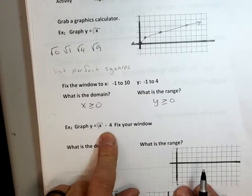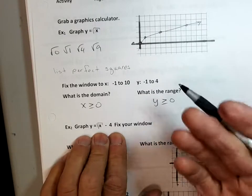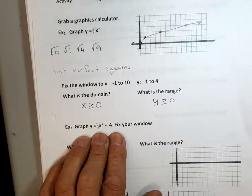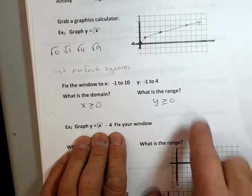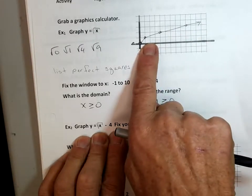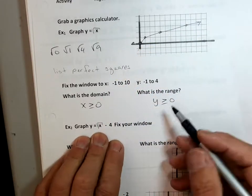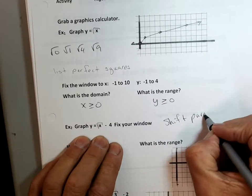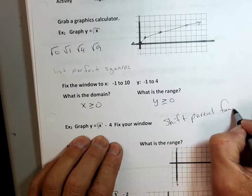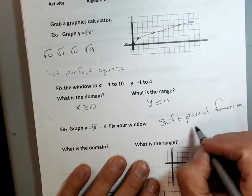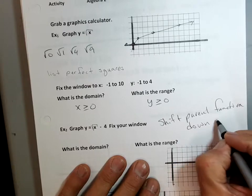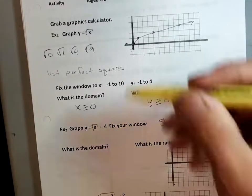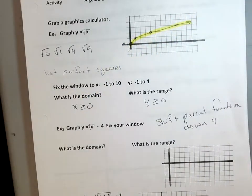OK, now, example two. Well, I could do this faster with my superior brain, right, than using a calculator because we're smarter than a calculator. We're just going to take this graph and bring it down 4, correct? All we're going to do is we're going to simply shift the parent function down 4.